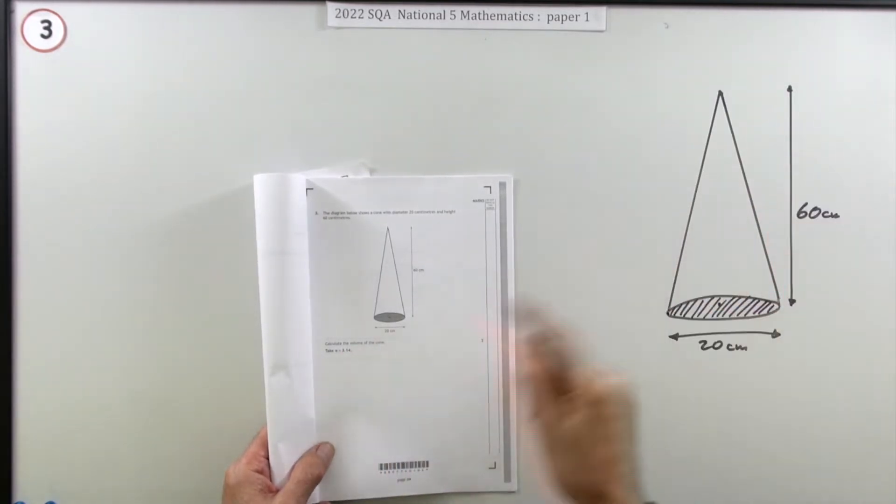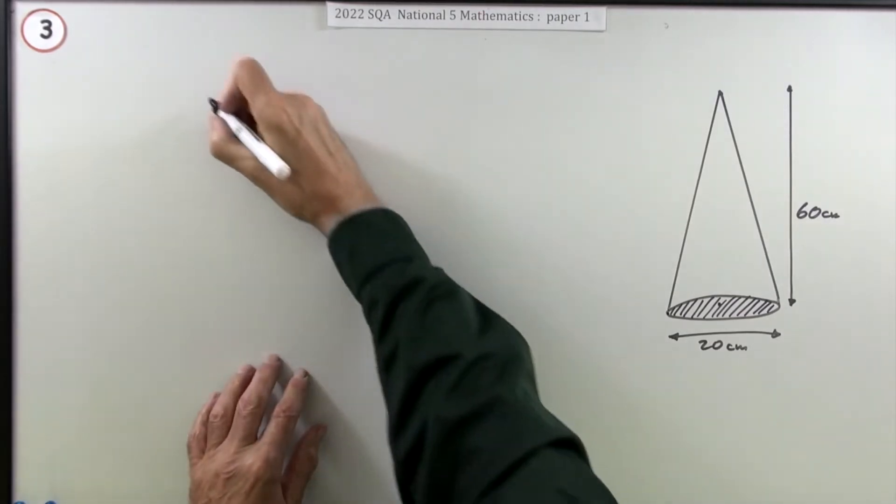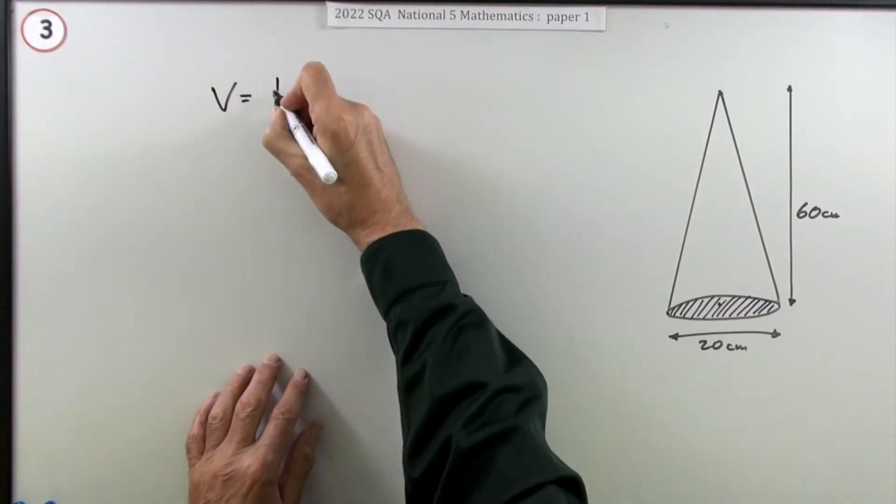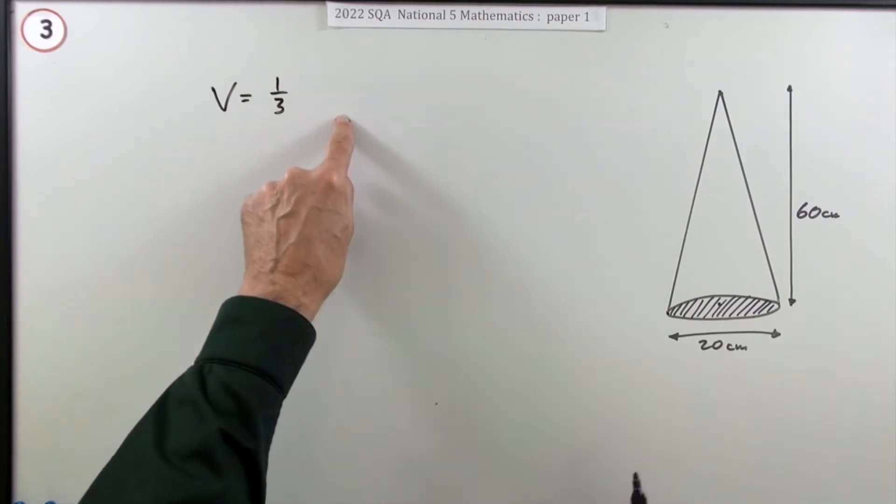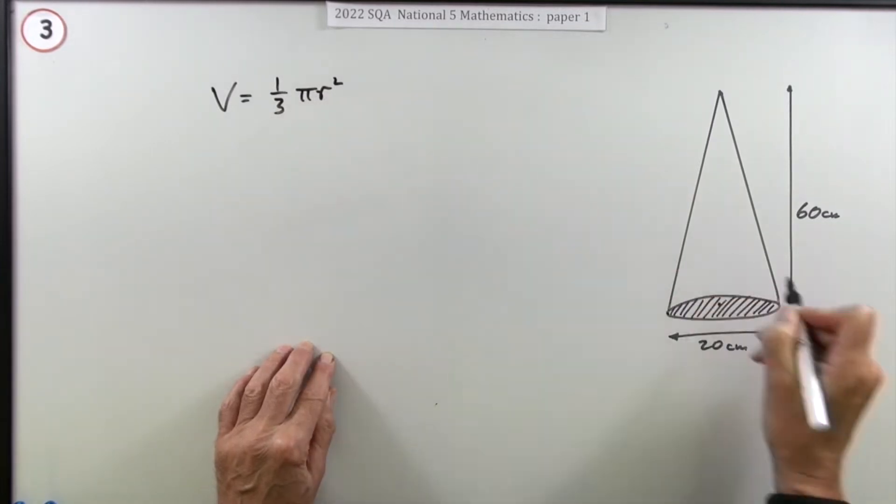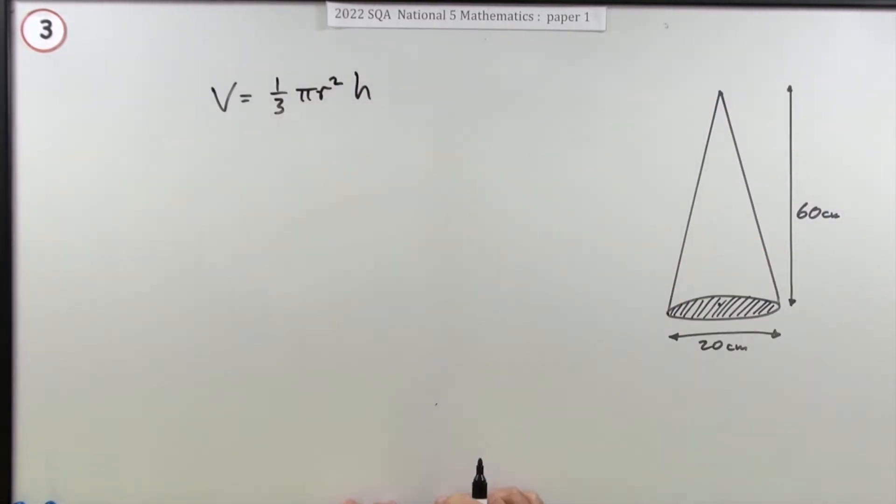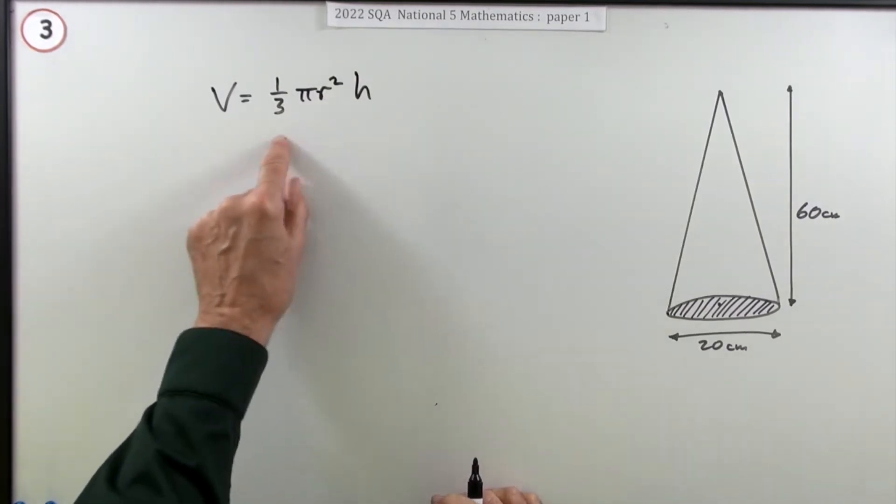What's its volume? Use 3.14 for pi. The volume of any pyramid is a third of the area of the base times the height. It's based on a circle, the area of a circle is πr², and the height would be h. So you should remember that: ⅓πr²h.